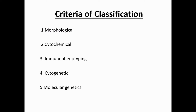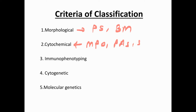We can classify leukemia on the basis of: morphology, cytochemistry, immunophenotyping, cytogenetics, and molecular genetics. Morphologically, on peripheral smear and bone marrow, we can differentiate myeloid from lymphoid cells. With cytochemistry, certain stains are used — myeloperoxidase (MPO) and Sudan Black are always positive in myeloid series; PAS is always positive in lymphoid series.